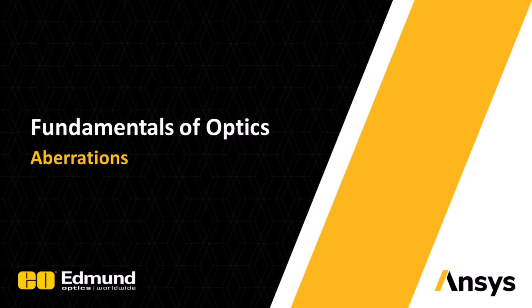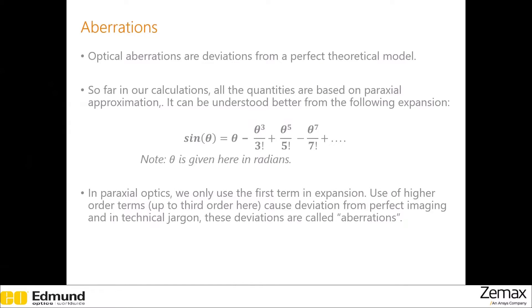In this section, we will talk about aberrations. If you want to excel at designing optical systems, a solid understanding of aberration is going to be very important. Aberration is the deviation from ideal behavior. So far, we have used paraxial approximation in all our calculations, where we only consider the first term in the sine expansion. But for larger angles, this approximation breaks down, and higher order dependence needs to be considered. These higher order terms introduce deviations from perfect imaging, and they are known as optical aberrations.